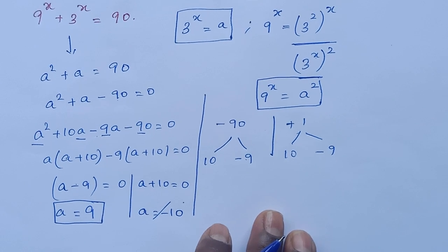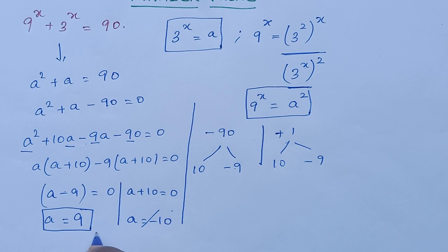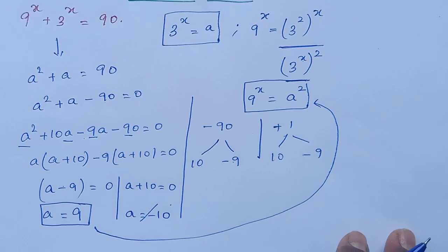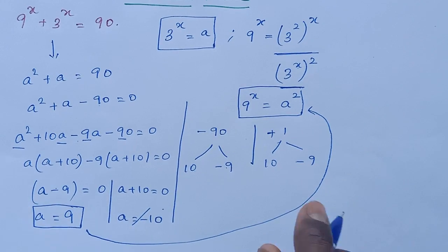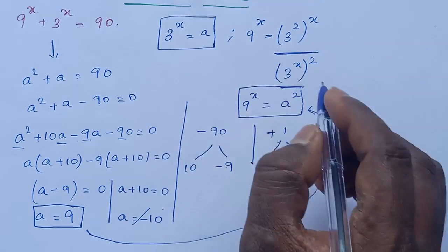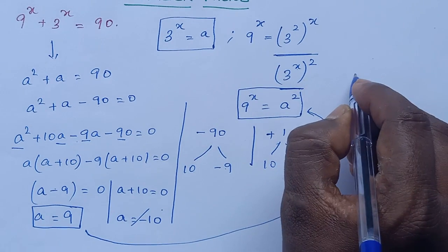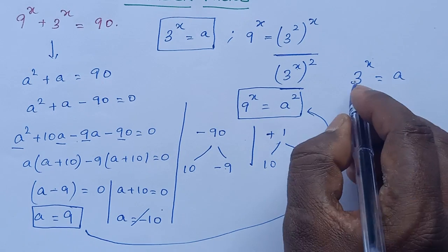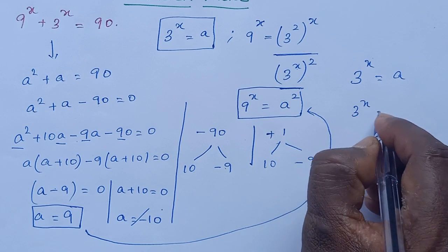Now we take this and plug it in here. We know 3^x equals a, so 3^x equals 9.